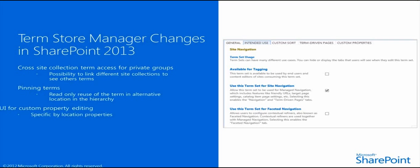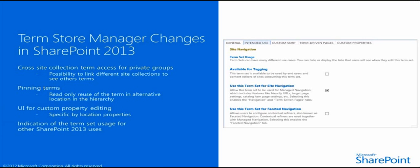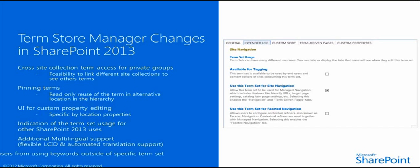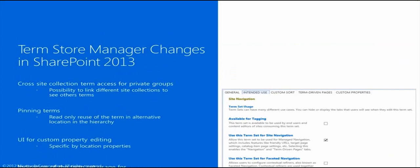We also have a separate UI for custom property editing, for example from a customization perspective, and there are a lot of out-of-the-box functionalities dependent on these custom properties. We can also indicate where the term set is actually used — whether it's used for tagging, site navigation, or basic navigation for search. For multilingual support, we have flexible and automated language ID support as well as automated translation support. We can also block users from using keywords outside of a specific term set.